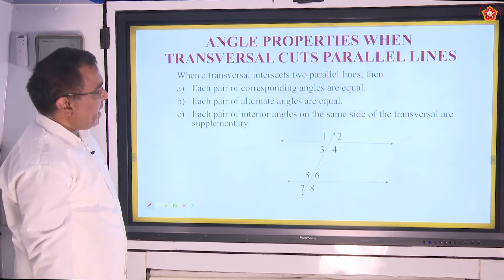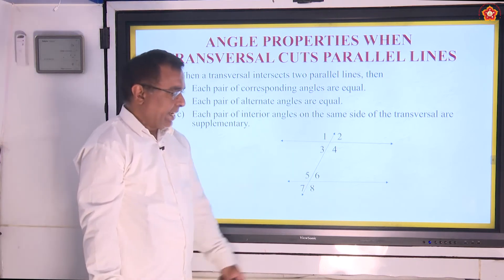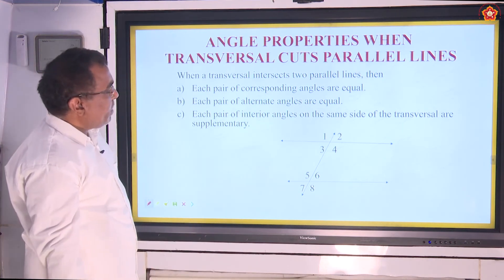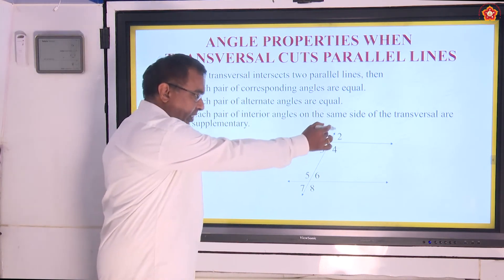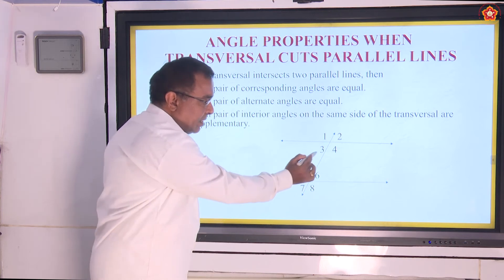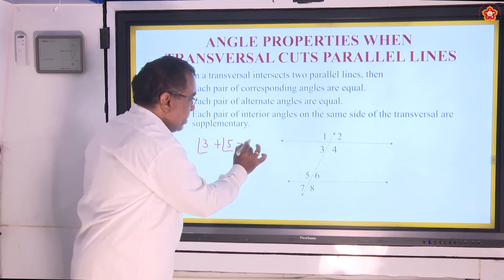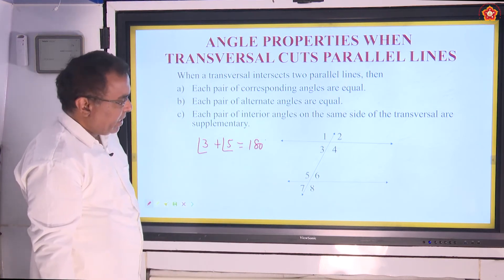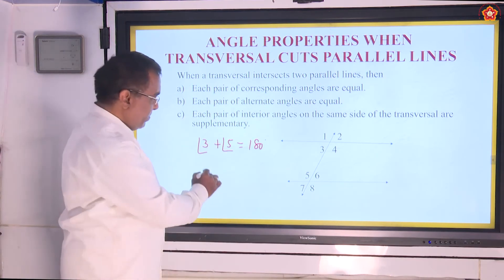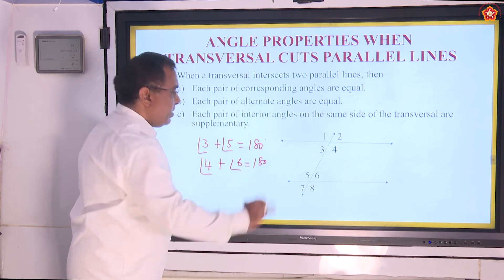The last property: each pair of interior angles on the same side of the transversal will be supplementary. The interior angles are 3, 4, 5 and 6. Angles 3 and 5 are on the same side of the transversal — their sum will be supplementary, that is 180 degrees. Similarly, angles 4 and 6 are the other pair of interior angles on the same side of the transversal, and their sum is also going to be 180 degrees.